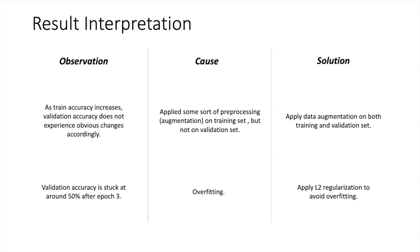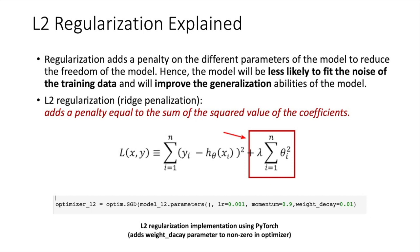So based on the preliminary result, we have some interpretations. From our first observation, the training accuracy increases while the validation accuracy does not change. Obviously, we believe that the cause is that we have applied some sort of preprocessing on training set, but not on validation set. And the solution is kind of simple, which is to apply the augmentation on both training and validation set in order to make both of these two sets on the same distribution. And the second observation is that our validation accuracy is stuck at around 50% after epoch 3. This is kind of tricky and we believe that the reason is overfitting. And we decide to apply the L2 regularization to avoid overfitting.